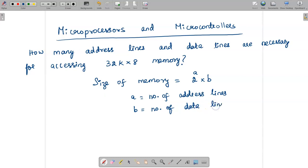Given the size of the memory, we can determine the number of address lines and data lines easily. This I have to write as 2^a × b. So 32k × 8 is given, and by comparing both I can easily say that b is 8.